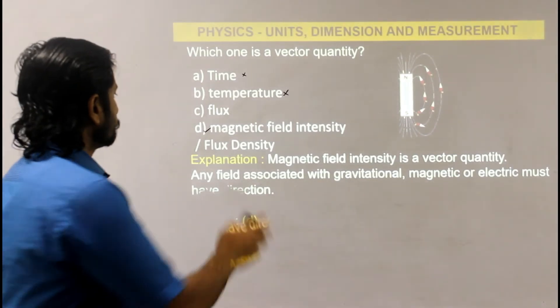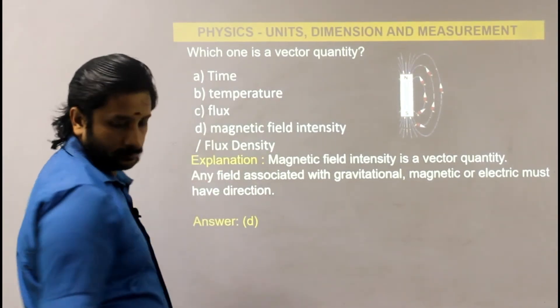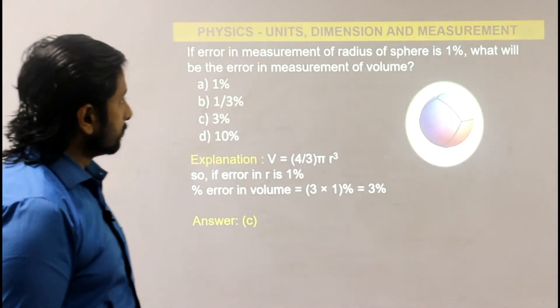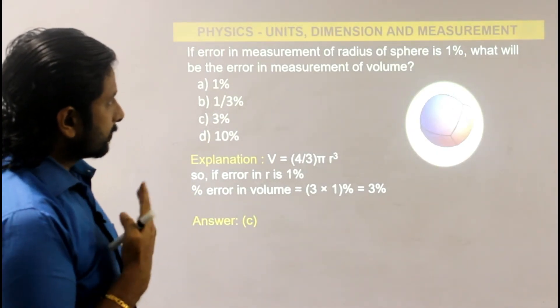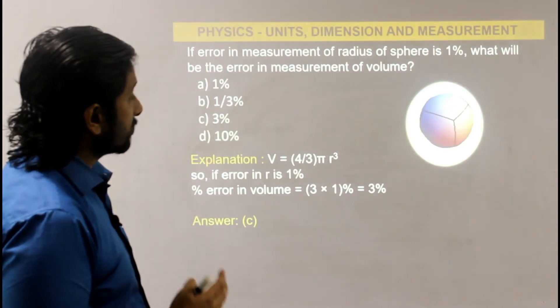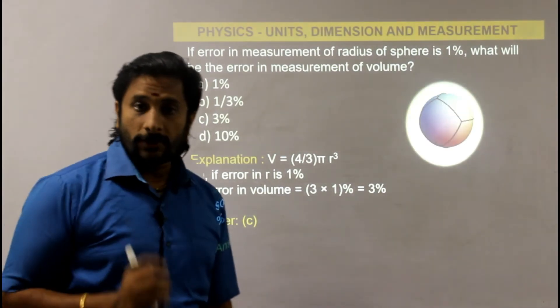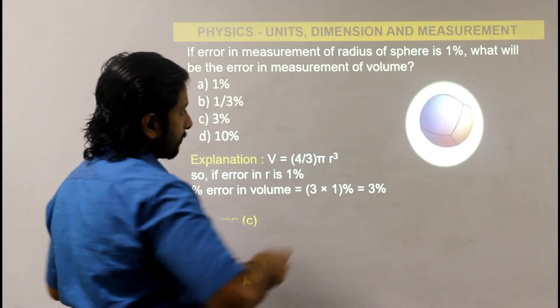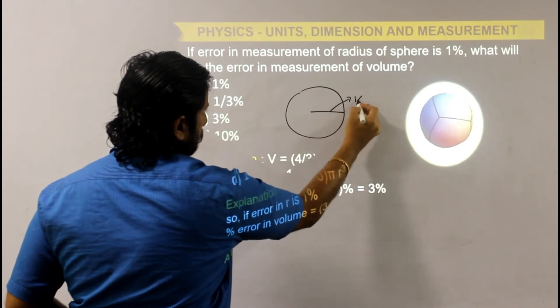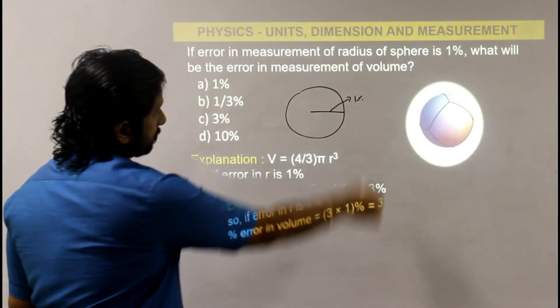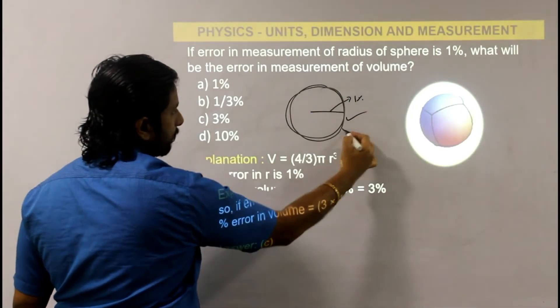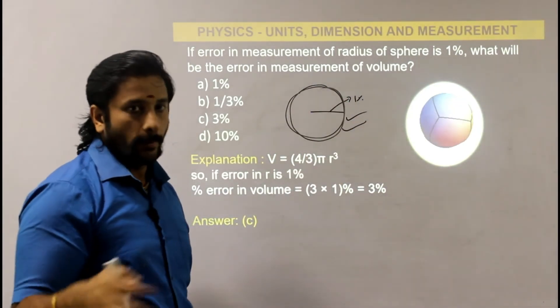Next question: if error in measurement of radius of a sphere is 1%, what will be the error in the volume? What will be the error in the volume? Let's look at the question.